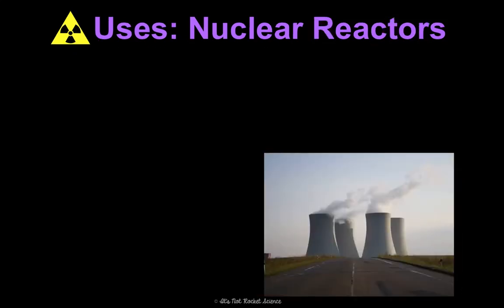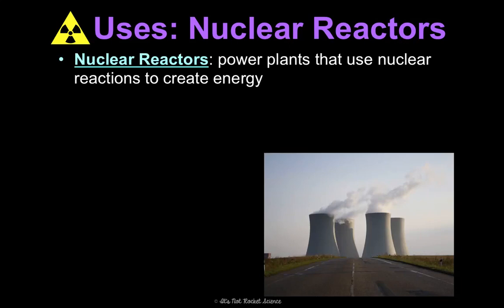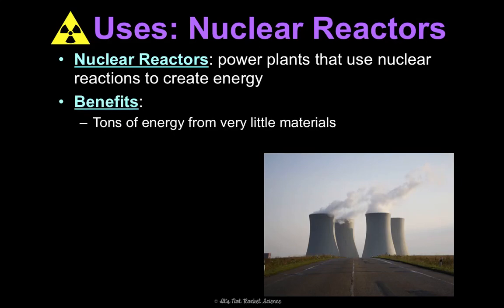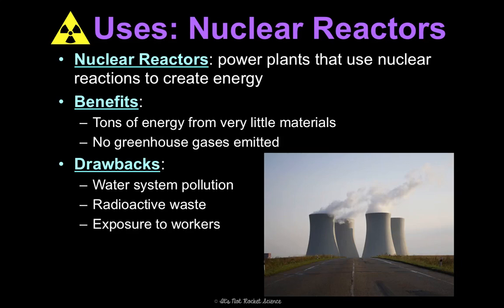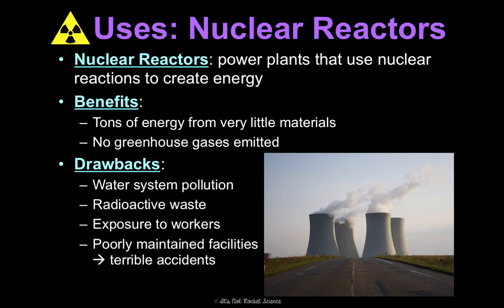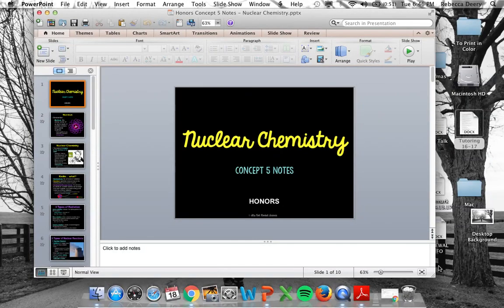The last use for nuclear chemistry is in nuclear reactors — power plants that use nuclear reactions to create energy. Benefits include making a ton of energy from very little material and not emitting greenhouse gases, so they don't contribute to global warming. Drawbacks include water system pollution, radioactive waste, radiation exposure with lifelong effects on workers, and the risk of catastrophic accidents from poorly maintained facilities — like Chernobyl, which we're going to watch a video about in class. And that is your brief summary on nuclear chemistry.